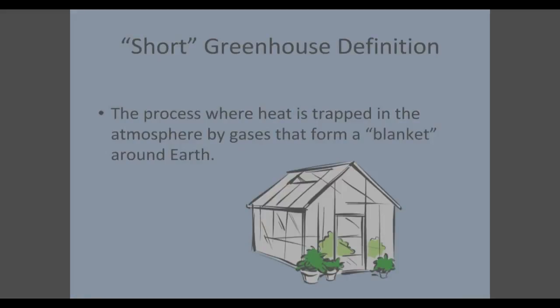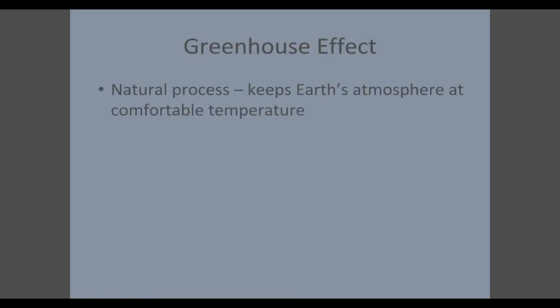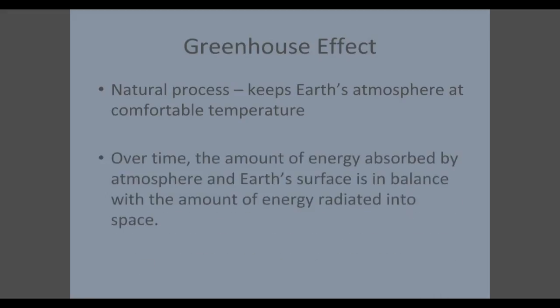The last thing that we're going to do is go over a short greenhouse definition. And that is the process where heat is trapped in the atmosphere by gases that form a blanket around our Earth. Remember that the greenhouse effect is a natural process. It's used to keep Earth's atmosphere at a comfortable temperature. And over time, the amount of energy that gets absorbed by our atmosphere and the Earth's surface has to stay in balance with the amount of energy that's radiated back into outer space. That keeps our temperatures consistent.